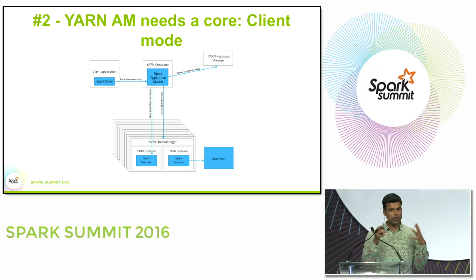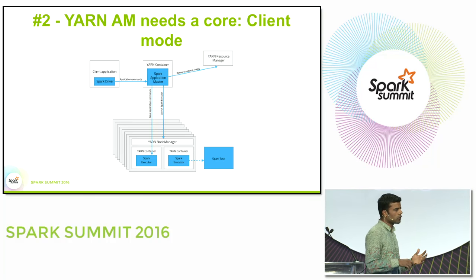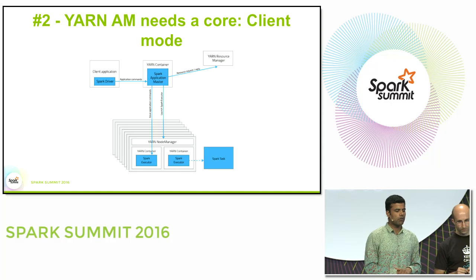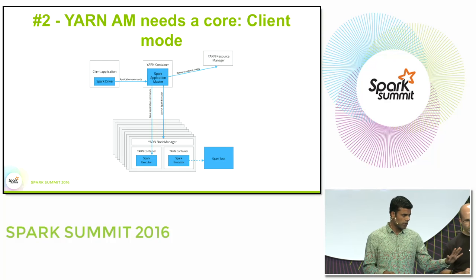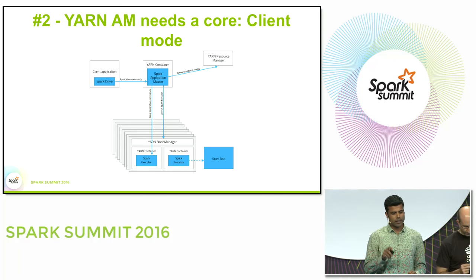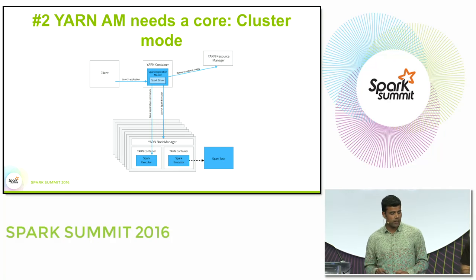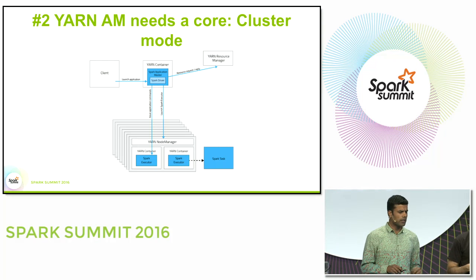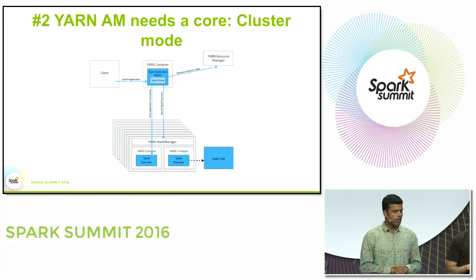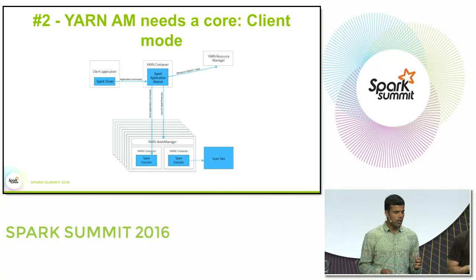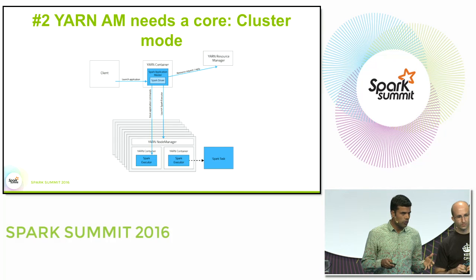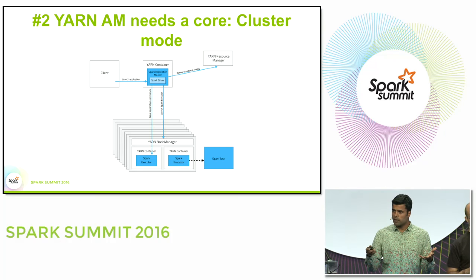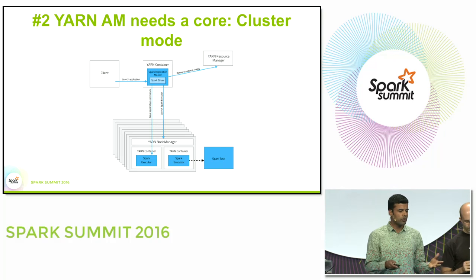The second consideration is the YARN Application Master. Spark on YARN can run in two modes: client mode, where the driver runs on the client and the YARN Application Master runs in a container, and cluster mode, where the driver runs inside the Application Master container. In both cases, the core used by the YARN Application Master cannot be used for regular Spark processing, leaving you with one fewer core across the cluster.